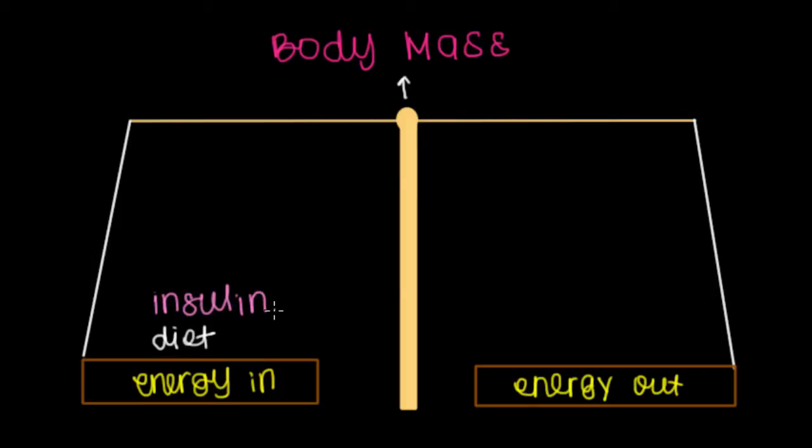One hormone is insulin, and that regulates blood glucose levels. There's also leptin, which is related to blood lipid levels. And then there's also another hormone that's called ghrelin, that's related to whether the stomach is full or not.